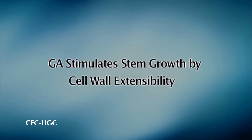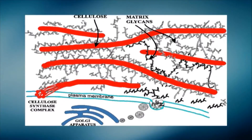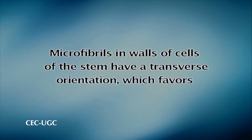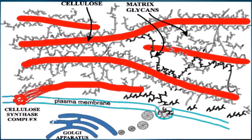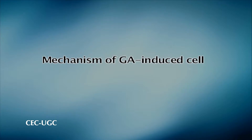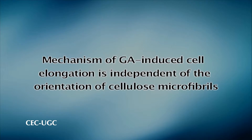GA also stimulates stem elongation through cell wall extensibility. The orientation of microfibrils determines the directionality of cell expansion but does not influence either the rate or magnitude of expansion. Normally, microfibrils in the walls of stem cells have a transverse orientation which favors elongation growth. In lettuce hypocotyl, GA was found to promote cell expansion even in the presence of the microtubule poison colchicine, which causes deposition of randomly oriented cellulose microfibrils in the cell wall. In this case, GA stimulates radial cell expansion instead of cell elongation.